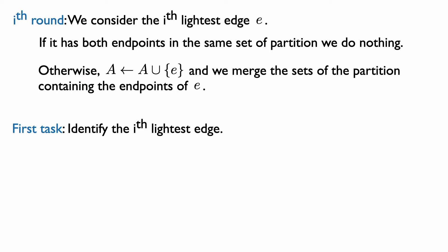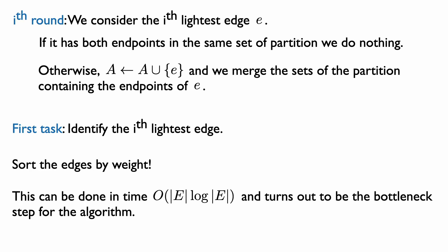For the first task, we have to identify the ith lightest edge. We can sort the edges by weight from smallest to largest, and then iterate over the edges in order of weight. So in the ith round, we know exactly what the ith lightest edge is. We can sort the edges in time O(E log E), and this actually turns out to be the most time-intensive step of Kruskal's algorithm.